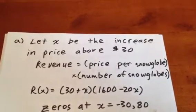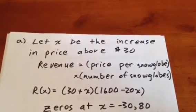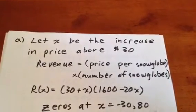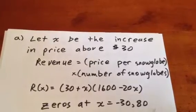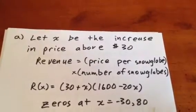But since 20 fewer snow globes are sold for every additional dollar in price, we know that the number of snow globes will be 1,600 minus 20X.